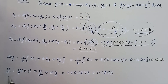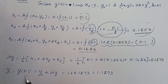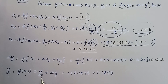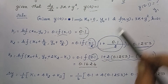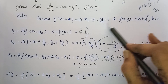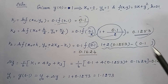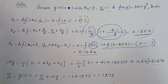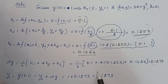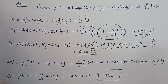Next, calculate y1. y1 = y(0.1), and the formula is y0 + delta y. y0 = 1 and delta y = 0.1273. Substituting and simplifying, the final answer is y1 = 1.1273.